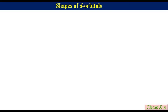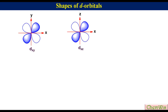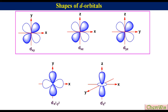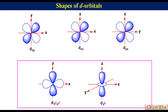Before going into details of splitting of d-orbitals in different environments, we will first discuss the shapes of different d-orbitals. We know that there are five types of d-orbitals: dxy, dxz, dyz, dx²-y² and dz². The dxy, dxz and dyz orbitals are lying between the axes, while dx²-y² and dz² are lying along the axes.